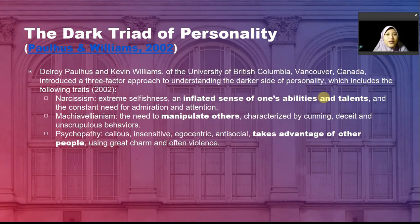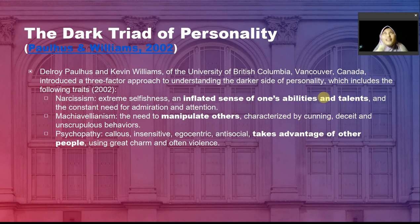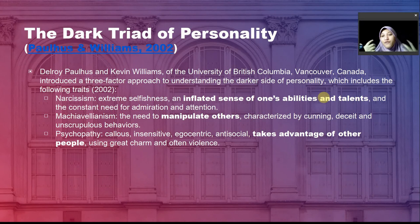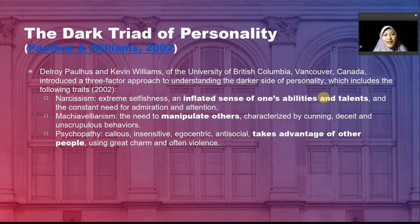The dark triad personality theory was coined by two personality psychologists from Canada — Delroy Paulhus and Kevin Williams. They formulated the theory stating that the darker core of human personality consists of three different dimensions. The first is narcissism, which exhibits extreme selfishness and an inflated sense of one's abilities and talent — positing unrealistic, grandiose feelings about ourselves.